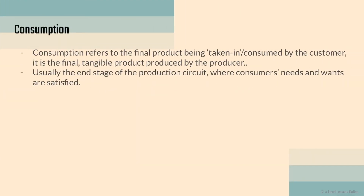Consumption refers to the final product being consumed by the customer who bought that good — it is the final tangible product produced by the producer. This is usually the end stage of the production circuit, when the consumer's needs and wants are fulfilled. Linking to basic economics: the consumer demands a good, the supplier acknowledges through price and supplies it. The production circuit ends with the consumer receiving the good they first demanded.